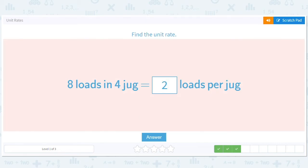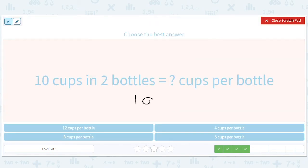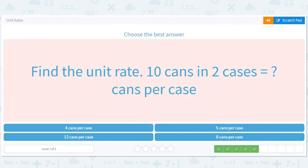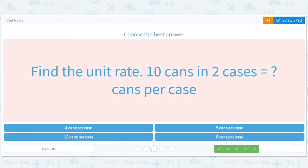Ten cups in 2 bottles, how many cups per bottle? 10 divided by 2, 5 cups per bottle. Ten cans in 2 cases, how many cans per case? 10 divided by 2, I think you get the pattern here, 5 cans per case. I hear a motorcycle out there.